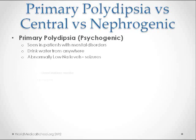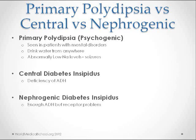Central diabetes insipidus has a deficiency of ADH, while in nephrogenic diabetes insipidus there is enough ADH, but the receptor doesn't work.